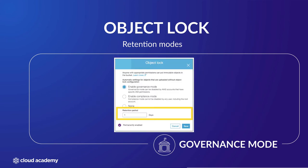When setting governance mode, you will be asked to add a retention period in days, which defines how long the object is protected by object lock, preventing it from being deleted. When an object is added to the bucket, a timestamp is added to the metadata reflecting the retention period. When the retention period is over, the object can then be deleted again.